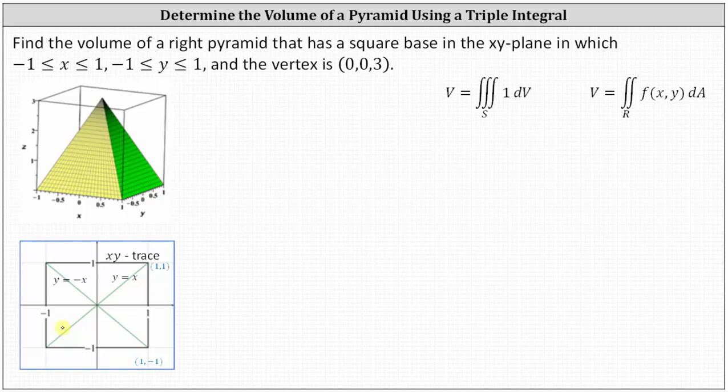To determine the volume, we can use a triple integral in which the integrated function is one and S is the pyramid, or we can use a double integral where f(x, y) would be the surface of the pyramid and the region R would be the region in the xy-plane. We're going to find the volume using a triple integral, but we'll also relate this to how it would look as a double integral.